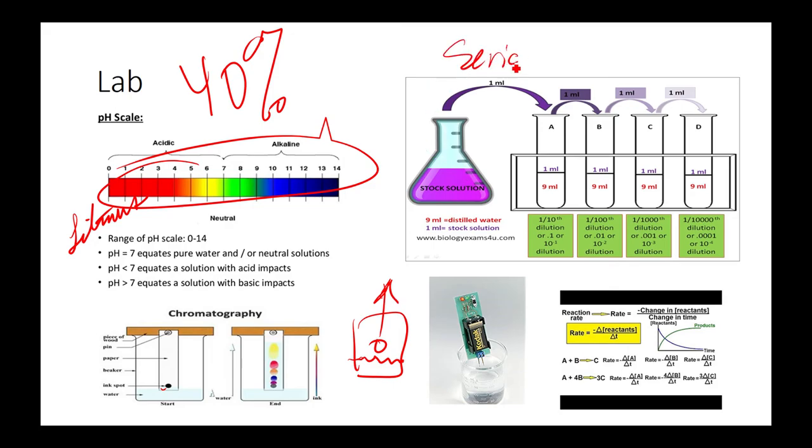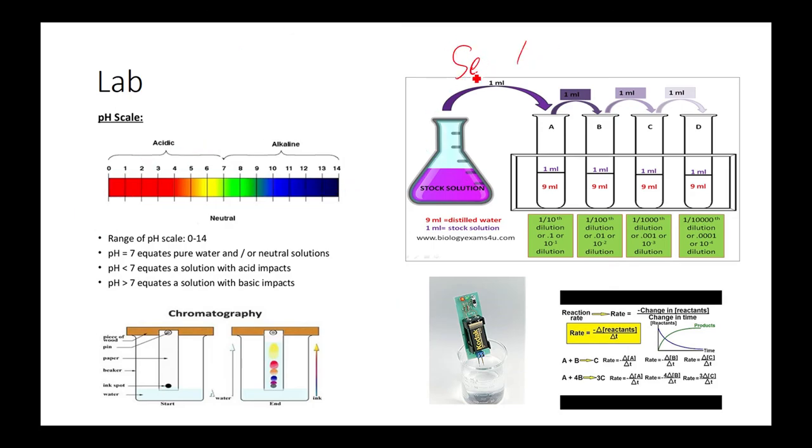This, we have a serial dilution, which is basically you take nine milliliters of water, one milliliter of stock solution. Or you can say 90% of water and 10% of stock solution, depends on what ratio you want it at. And then you basically separate one-tenth, one-hundredth, one-thousandth, and then one-ten-thousandth.